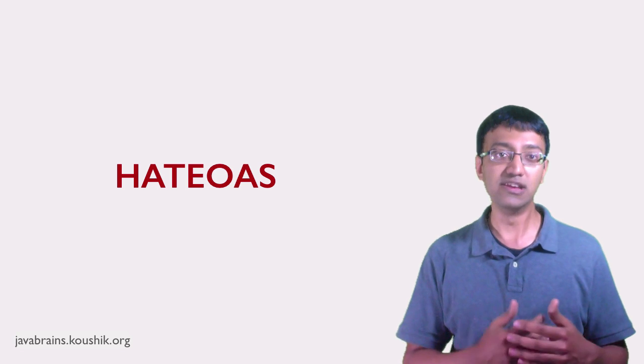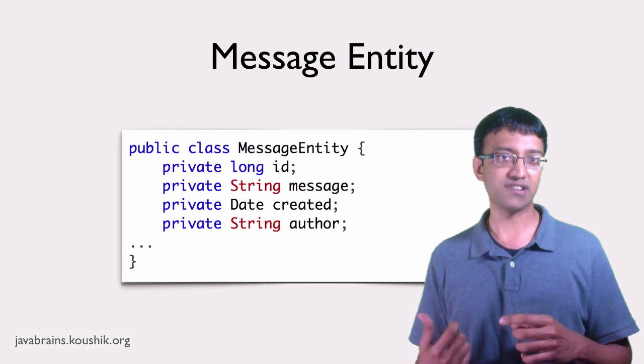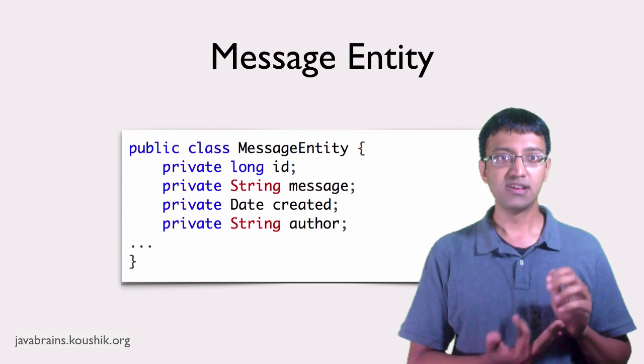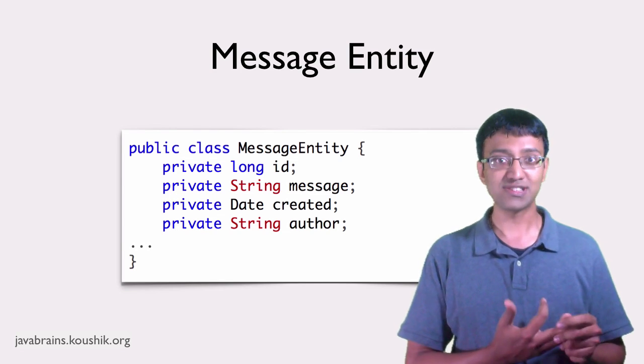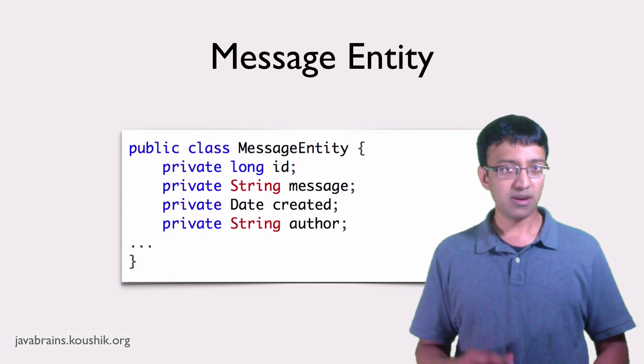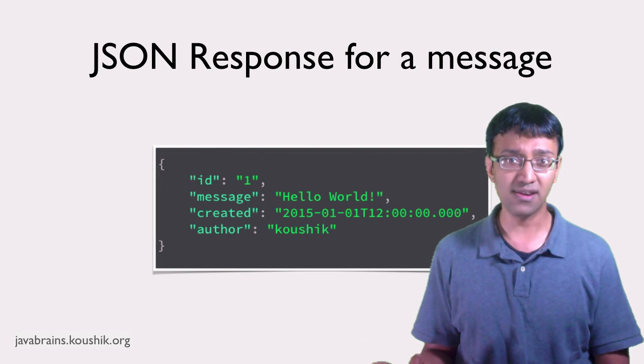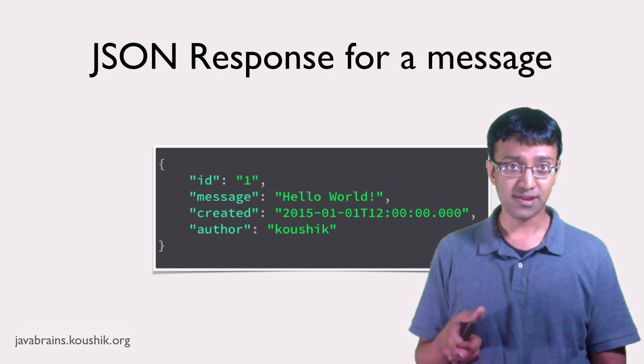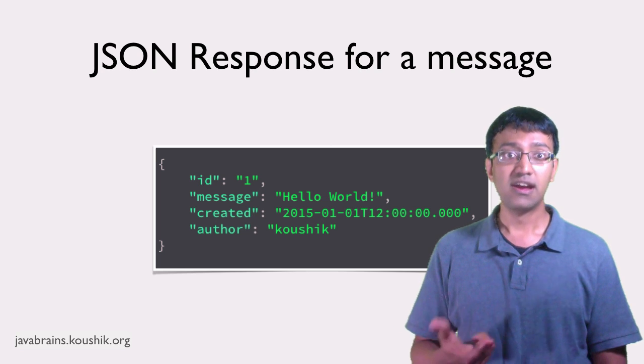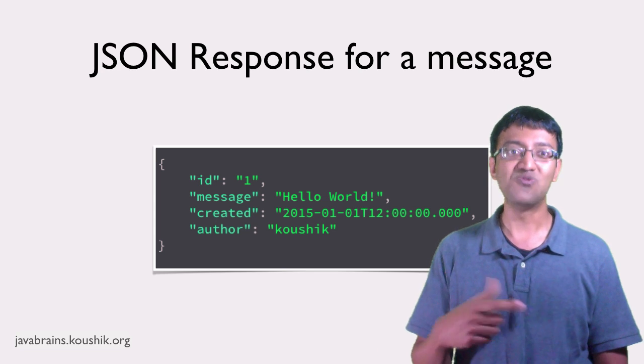Let's start with the slash messages collection URI. Accessing slash messages should give you a list of messages in the system. Let's say a message representation has the following fields, right? The message ID, the actual content of the message, the message author who posted that message, and the posted date, right? Four simple properties. A JSON representation for a sample message would look something like this. Let's say this is a message ID one. So it has the ID value. It has the content, which is the body of the message. It has the author who posted it. Apparently that's me. And the posted date, which is when I posted it.